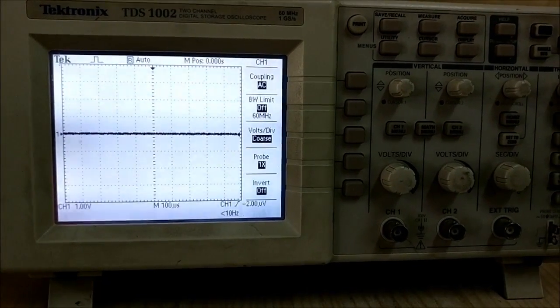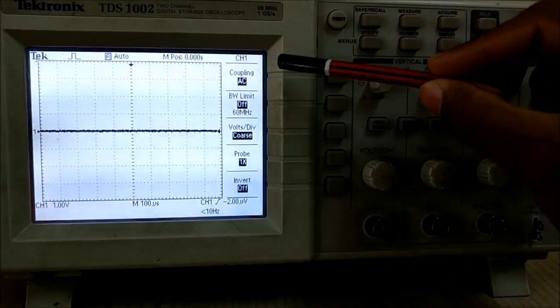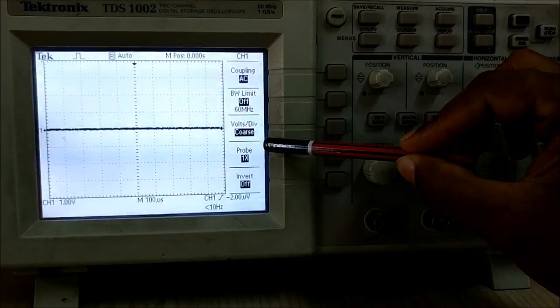Now you can see the default window of the DSO. Coupling is AC, bandwidth limit is given, and voltage per division is also shown.